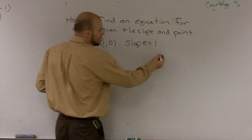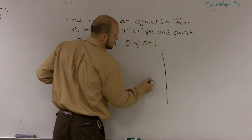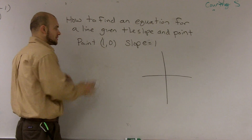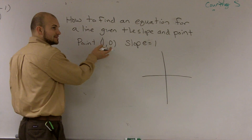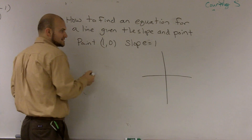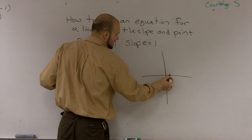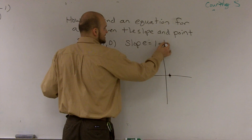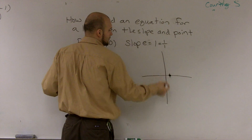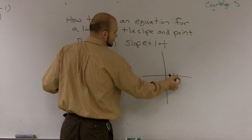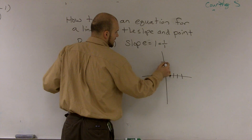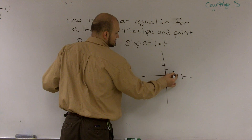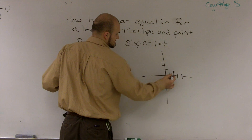We're pretty well versed in my class at finding this algebraically. We know the point — this is actually going to be your x-intercept, which is (1, 0) right here. And if I want to know the slope, I know I can rewrite this as 1 comma 1. So it's going to be up 1, over 1, and it's going to look something like this.